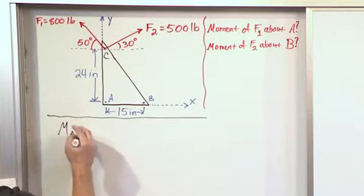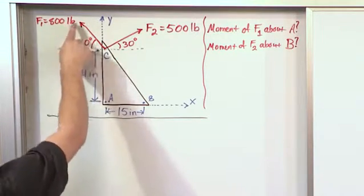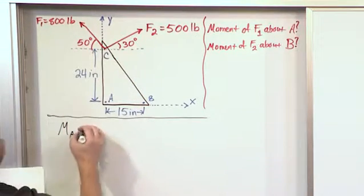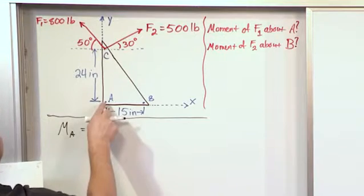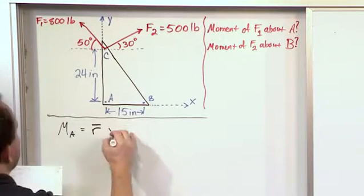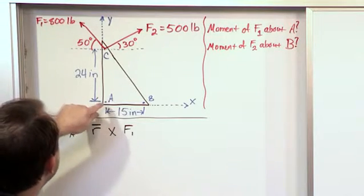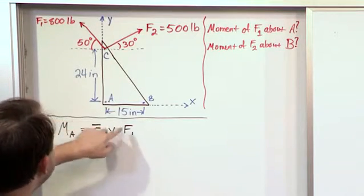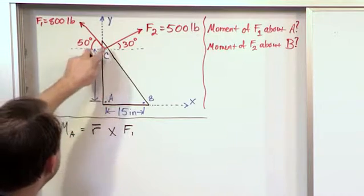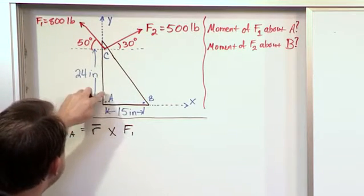So the moment about point A due only to force F1 is going to be equal to the radius vector from A to the point of application crossed with force F1. Now again, I want to caution you that when we say R cross F, this vector—in this case we're going to be taking it from A all the way up to the point of application.